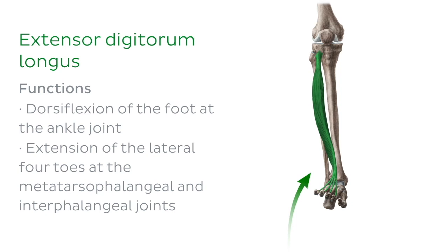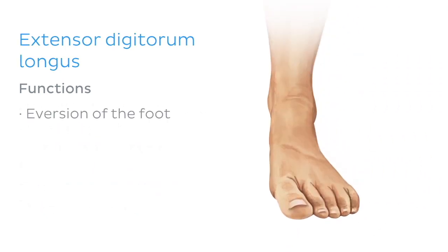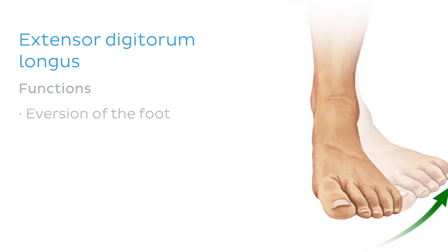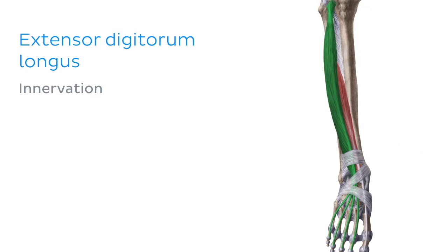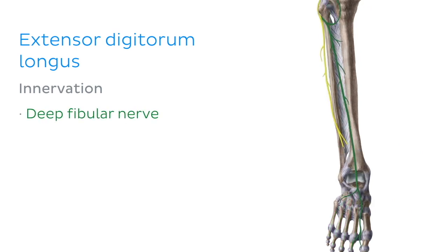This muscle also causes eversion of the foot, which involves tilting the sole of the foot away from the midline of the body. Like the tibialis anterior, the extensor digitorum longus is innervated by the deep fibular nerve, which we can see here highlighted in green.